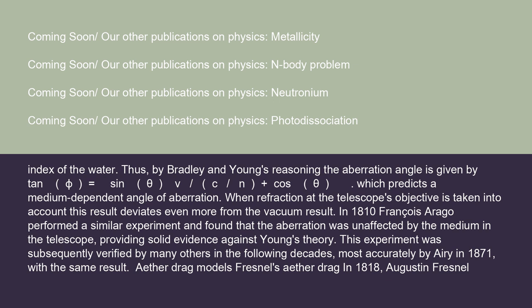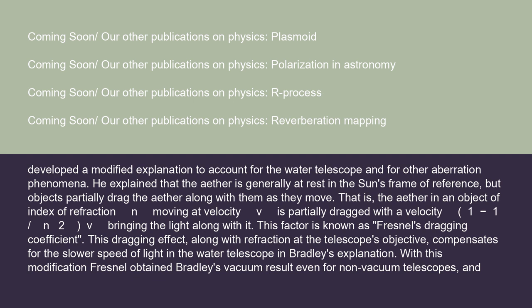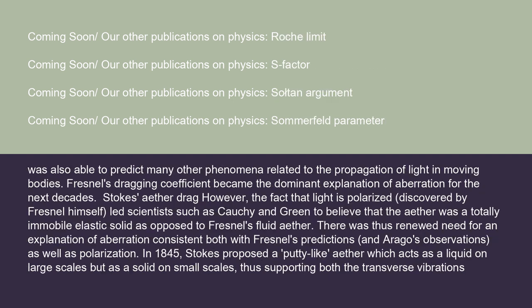Ether drag models — Fresnel's ether drag: In 1818, Augustin Fresnel developed a modified explanation to account for the water telescope and other aberration phenomena. He explained that the ether is generally at rest in the Sun's frame of reference, but objects partially drag the ether along with them as they move. That is, the ether in an object of index of refraction N moving at velocity V is partially dragged with a velocity (1 − 1/N²)·V, bringing the light along with it. This factor is known as Fresnel's dragging coefficient. This dragging effect, along with refraction at the telescope's objective, compensates for the slower speed of light in the water telescope in Bradley's explanation. With this modification, Fresnel obtained Bradley's vacuum result even for non-vacuum telescopes and was also able to predict many other phenomena related to the propagation of light in moving bodies. Fresnel's dragging coefficient became the dominant explanation of aberration for the next decades.